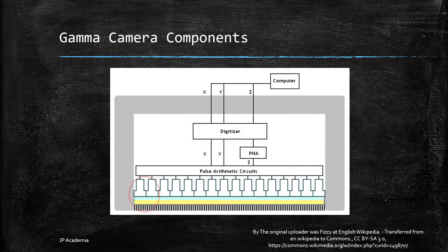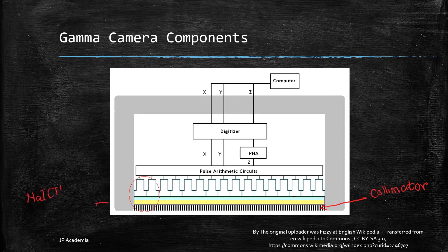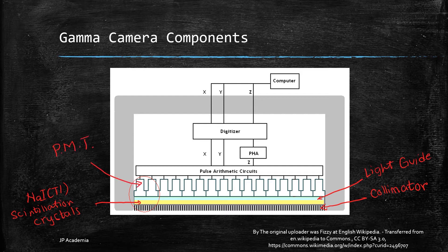Now, let's go to the main components of the gamma camera. We have the collimator, the sodium iodide doped with thallium scintillation crystals, the one in yellow here, then we have a light guide, followed by the PMTs or the photomultiplier tubes.